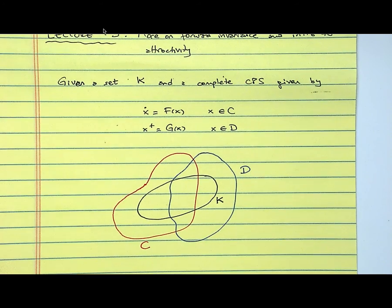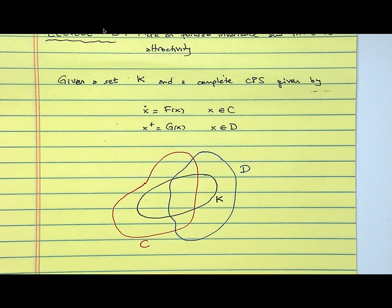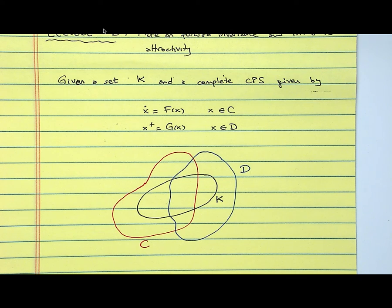Now, as you probably realize, if you pick an initial condition that is out here, there is nothing you can do from that point. Actually, that point would not define an execution because it's not part of where you can flow or where you can jump. So when you're looking at invariance, you can, without loss of generality, think about sets K that are contained in these regions.